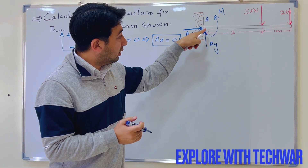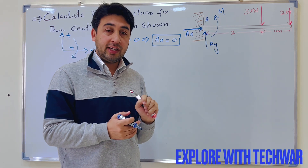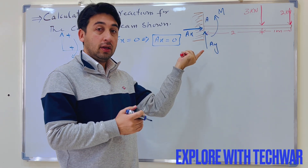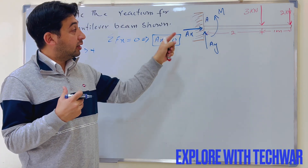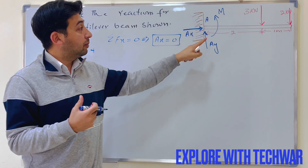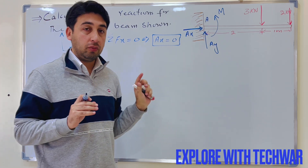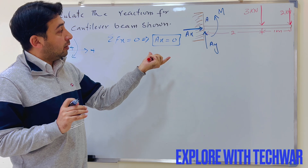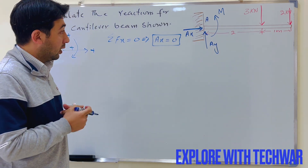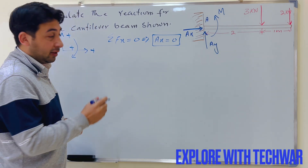One thing to keep in mind: I am assuming AX acts to the right, AY acts upward, and the moment acts anti-clockwise. This is just an assumption — I don't know whether AY is upward or downward, or whether the moment is clockwise or anti-clockwise. I have assumed directions and will solve, then determine whether the assumption is correct.